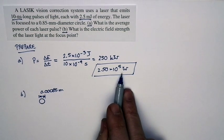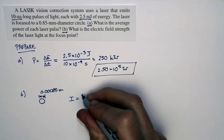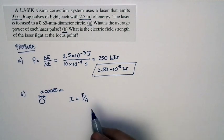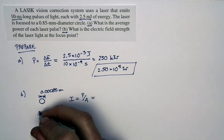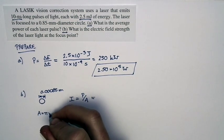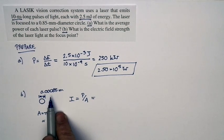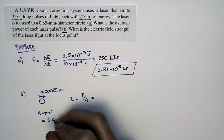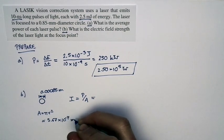2.5 times 10 to the fifth watts gets focused into that tiny circle. And so the intensity, which is the power divided by the area, is going to be very large. Indeed, we expect a very large intensity. The area is just pi r squared. If we work out the radius is equal to one half of this, the area is 5.67 times 10 to the minus 7th square meters.